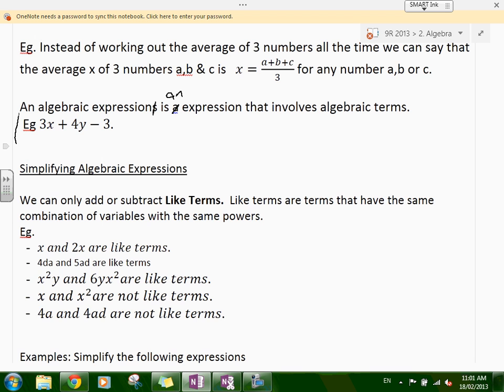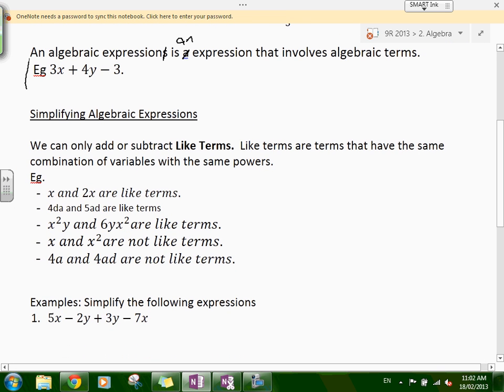A few examples: x and 2x are like terms because we have x and x. 4da and 5ad are like terms. The order is not important. We're simply interested in the combination of the variables.